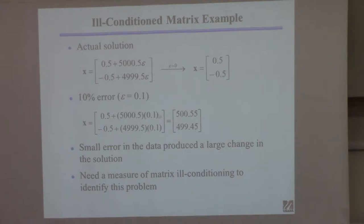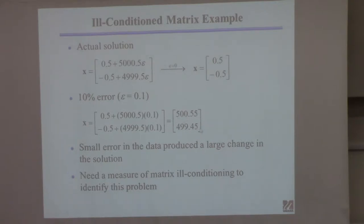If you have a 10% error, which means epsilon is like 0.1, right? So that second b element, instead of being 1, it's 1.1. Then the solution becomes that. That's nowhere close to the real solution.